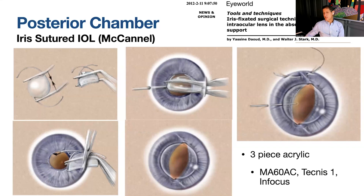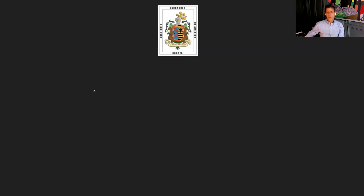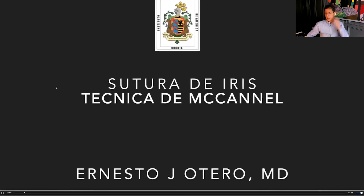We can see the haptics through the iris, then pass a prolene suture underneath, capturing the haptics with the iris. In McCannel's original technique, a scleral incision was made to exteriorize and tie the suture; we can perform a modified Siepser knot in the anterior chamber instead. This video was taken in the Flying Eye Hospital during an Orbis program in Panama.